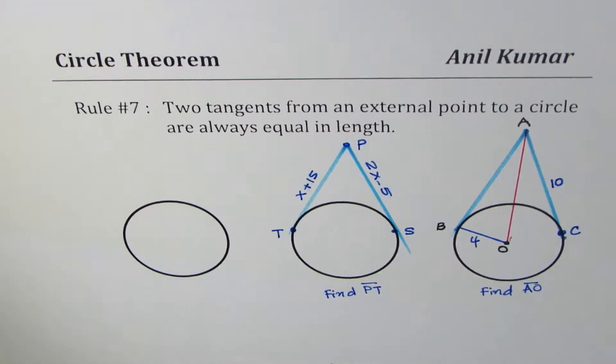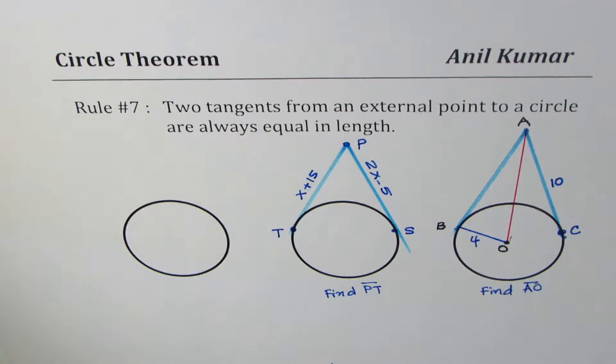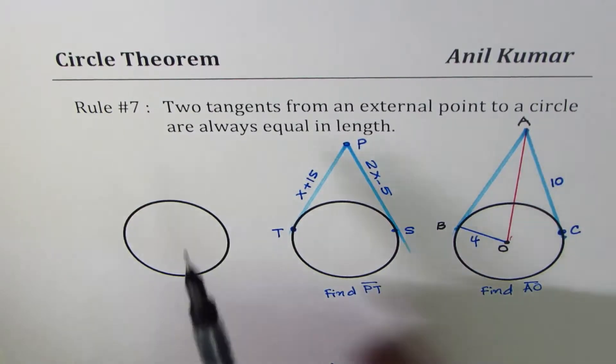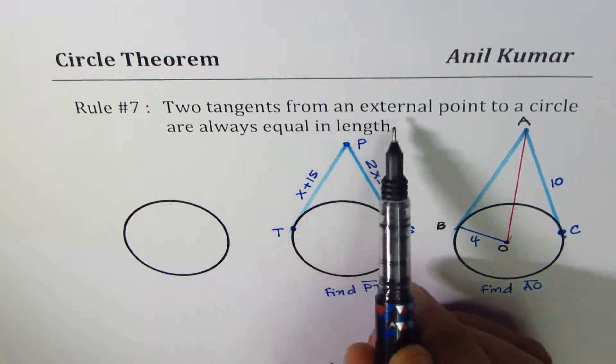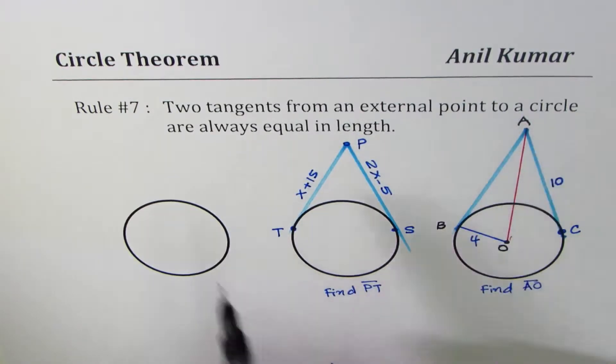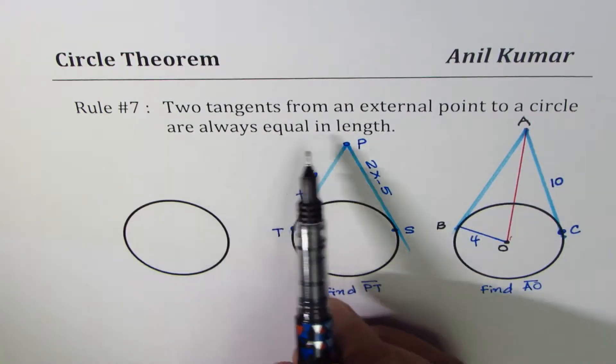I am Anil Kumar and in this video we will understand circle theorem relating length of tangents from an external point. The rule is two tangents from an external point to a circle are always equal in length.